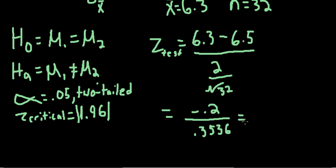So negative 0.2 divided by 0.3536 gives us a z-value of negative 0.57 if we round to two decimals.